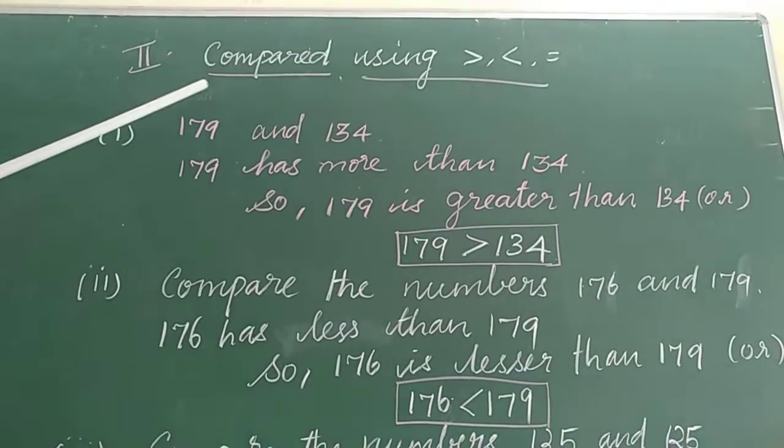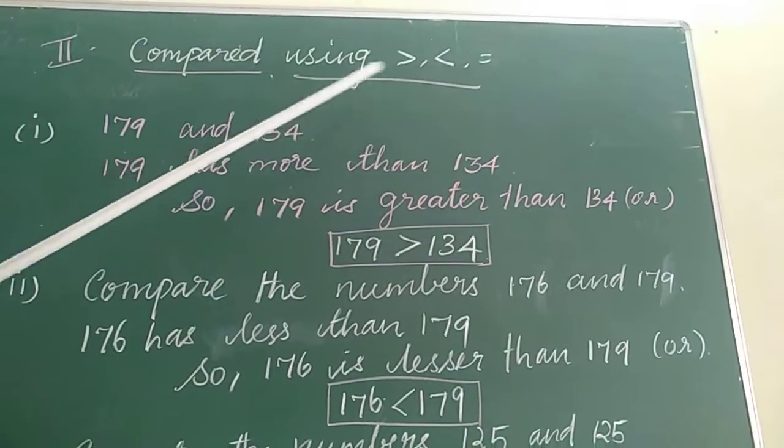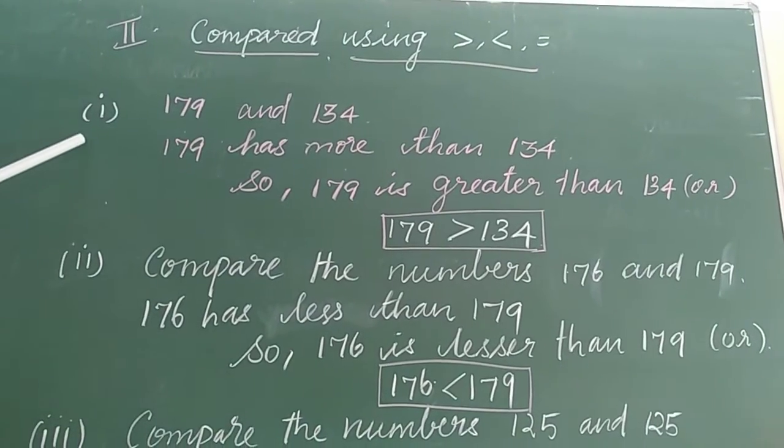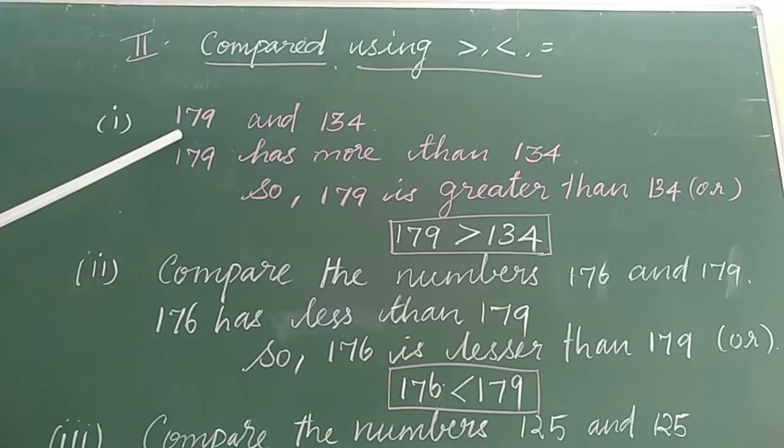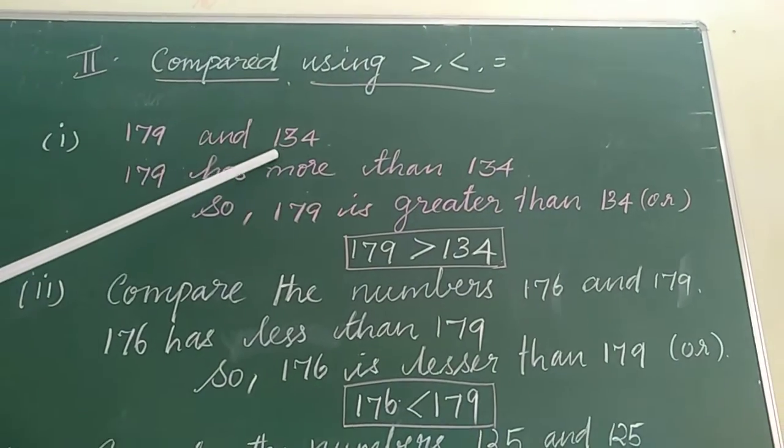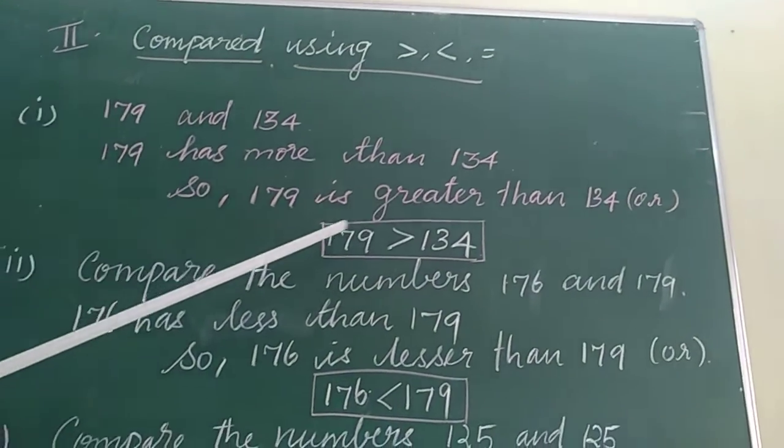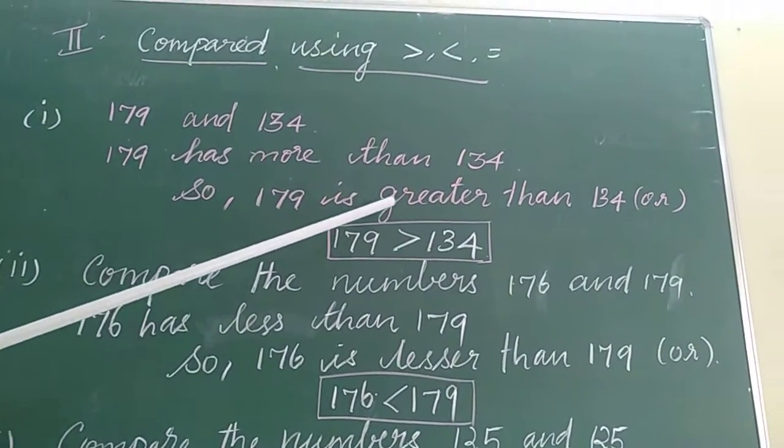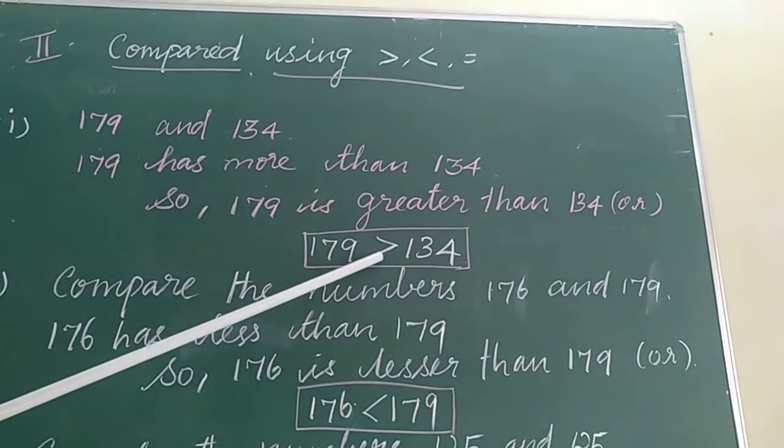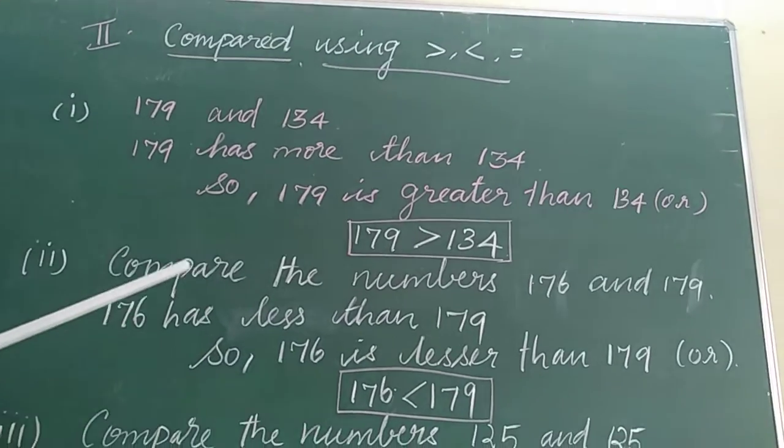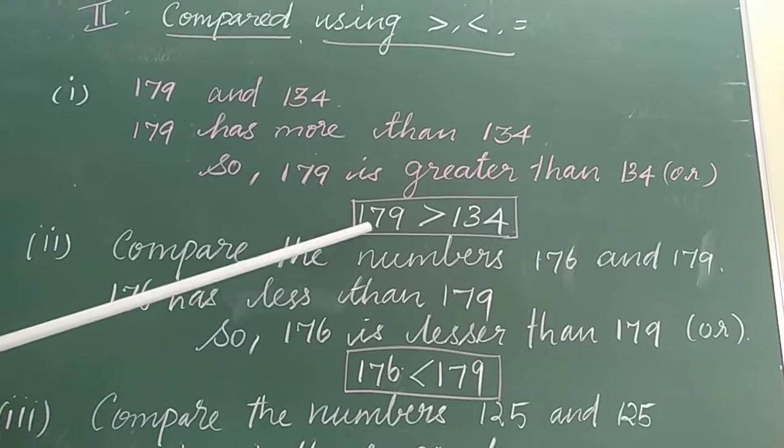Let's see second part from this lesson, compare using greater, lesser and equal. Now, I have given 3 examples for you to explain greater, lesser and equal. The first one is greater, 179 and 134. The 179 has more than 134. So, 179 is greater than 134, or 179 greater 134. In order to compare 3 digit numbers, we first compare the digit in the 100th place.